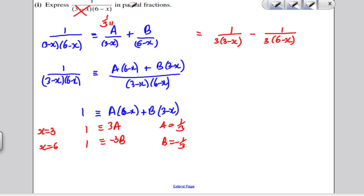And I do the exact same for the other one. I cover up that one and put in the number into the remaining that would make that 0. So I put in 6. 1 over 3 minus 6, which is 1 over minus 3. So that one must be 1 over minus 3. And I could just write it straight out like that.